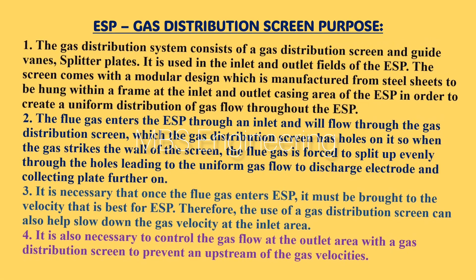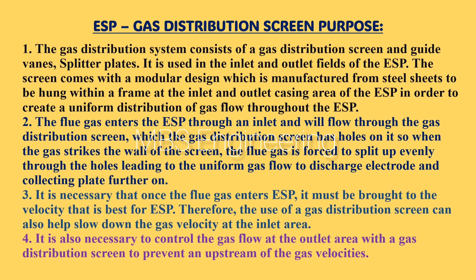Point 2: the flue gas enters the ESP through an inlet and flows through the gas distribution screen, which has holes on it. When the gas strikes the wall of the screen, the flue gas is forced to split up evenly through the holes, leading to uniform gas flow to the discharge electrode and collecting plate.